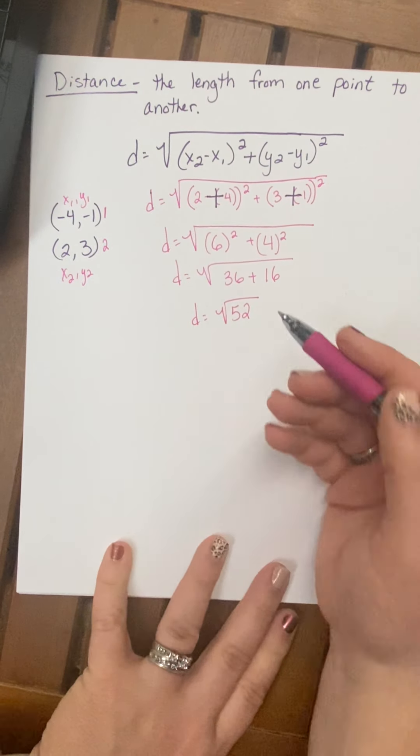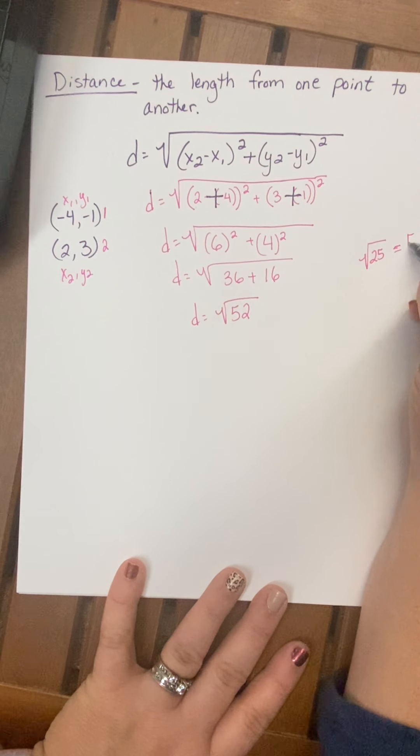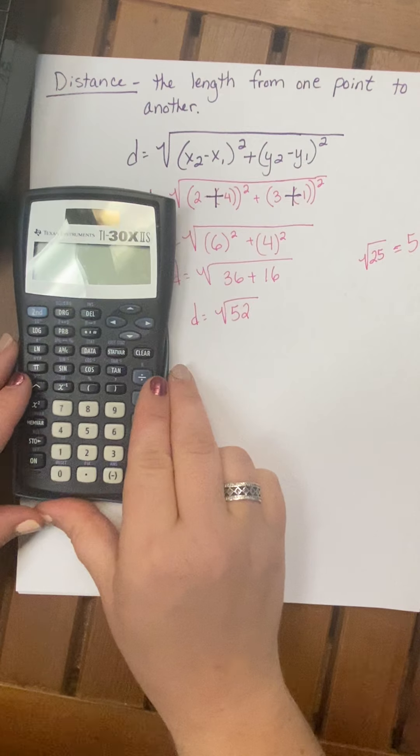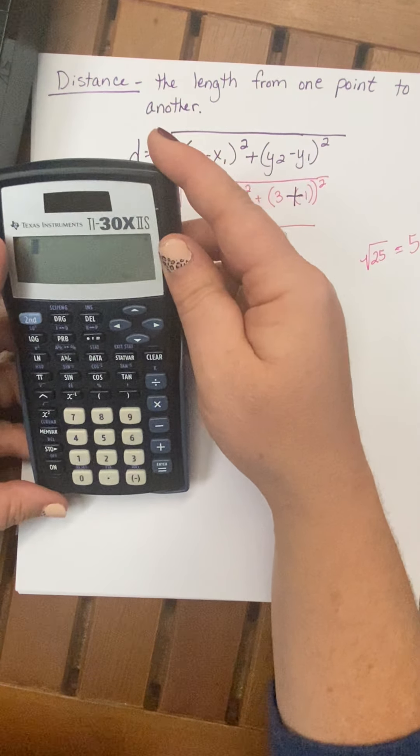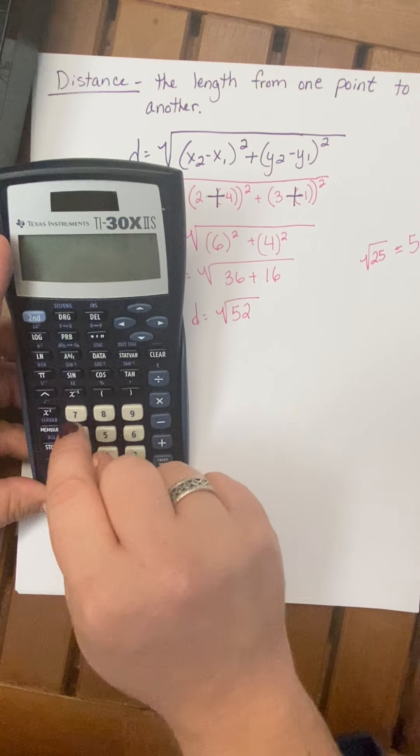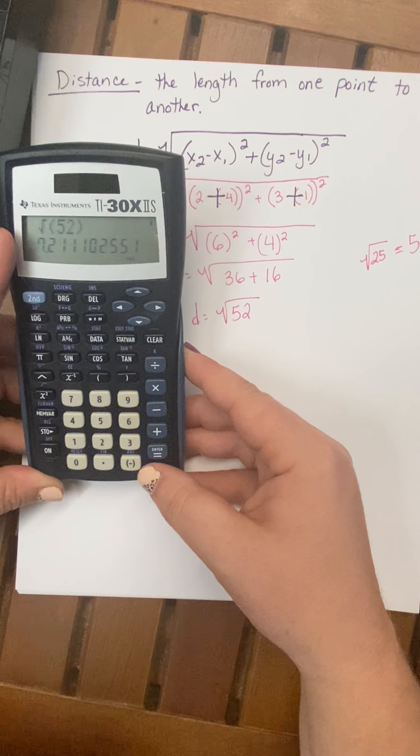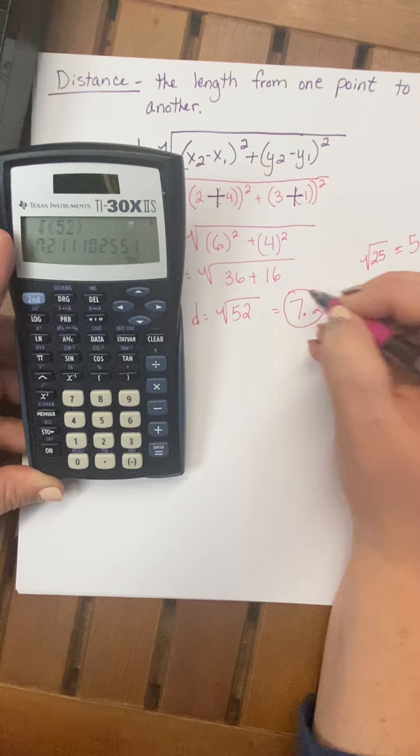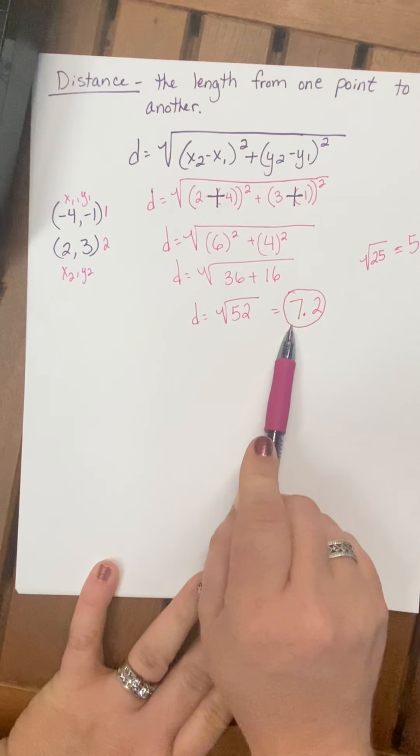So the distance is the square root of 52. Now we cannot divide 52 evenly to get the square root. And if you remember, let's recall that the square root of a number, like square root of 25, is basically saying 5 times 5 is 25. So the square root of 25 is 5. Now I'm not wanting you to leave these in square root form. All right, so you might need a calculator. And I'm going to use this TI-30X. I'm going to plug in the square root of 52. Let me go back. 52. Square root of 52. And that gives me 7.211102551. So I'm going to round that to give me 7.2, rounded it to the nearest tenth. The tenth is the first number after the decimal. All right, so the distance from negative 4, negative 1 to 2, 3 is 7.2.